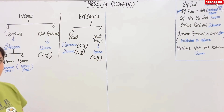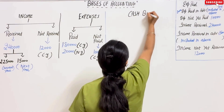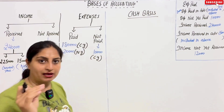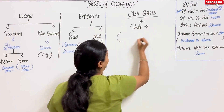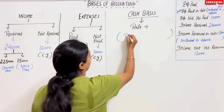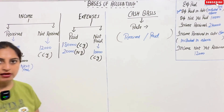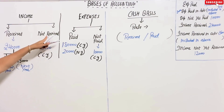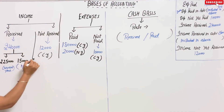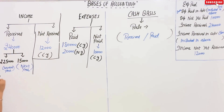Now we will use our method. First, cash basis of accounting. Under cash basis, what do we record? Only what has been received or paid. So for cash basis, we take income from the 'received' column and expenses from the 'paid' column. We do not include the 'not received' column.